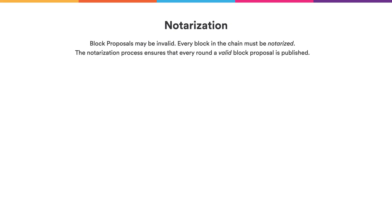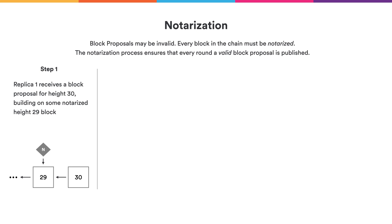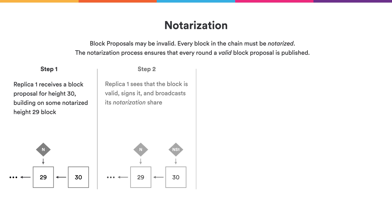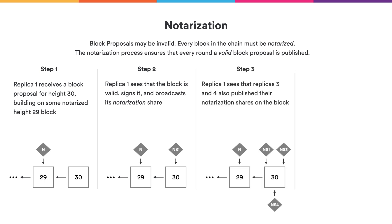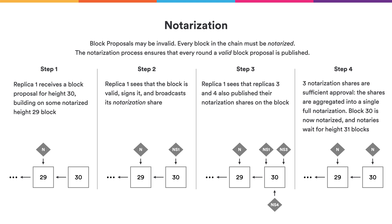The notarization process ensures that every round we have at least some valid block that can extend the blockchain. Replica 1 has a notarized blockchain up to height 29. If it now sees a block extending that blockchain at height 30 and validates that block as valid, it places a cryptographic signature on it called the notarization share. This is sent to the other replicas expressing that Replica 1 thinks this is a good block. If replicas 3 and 4 also create notarization shares on that same block, and 3 out of 4 replicas is sufficient approval, we combine these three notarization shares into a single artifact called the notarization, and block 30 is notarized.